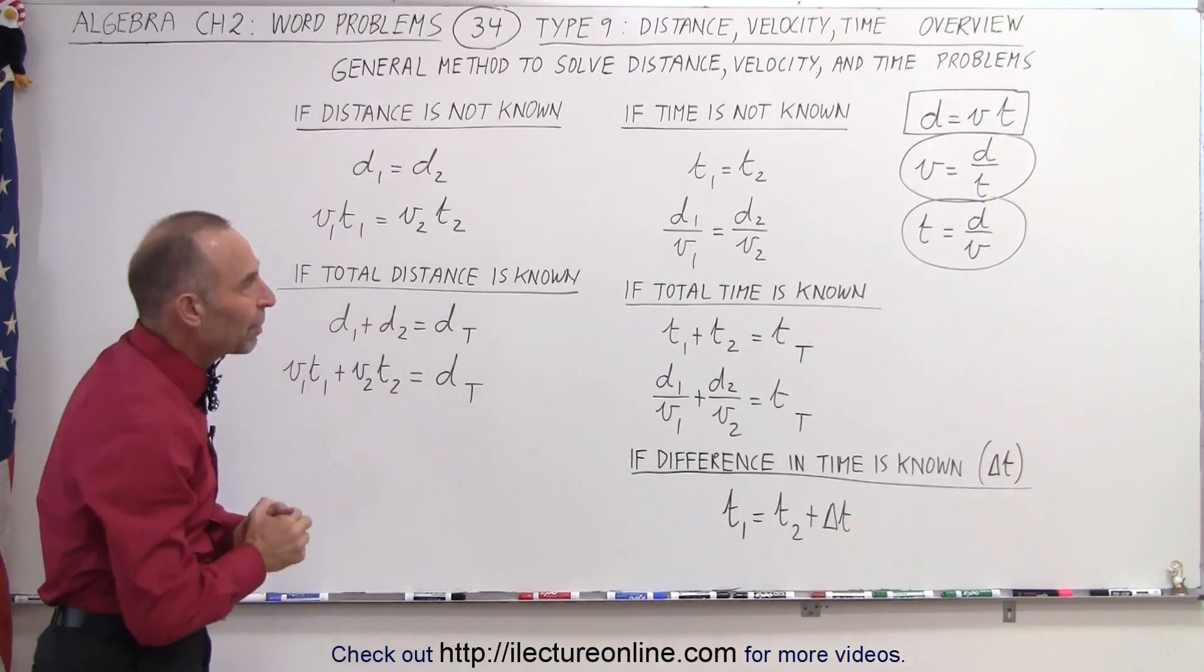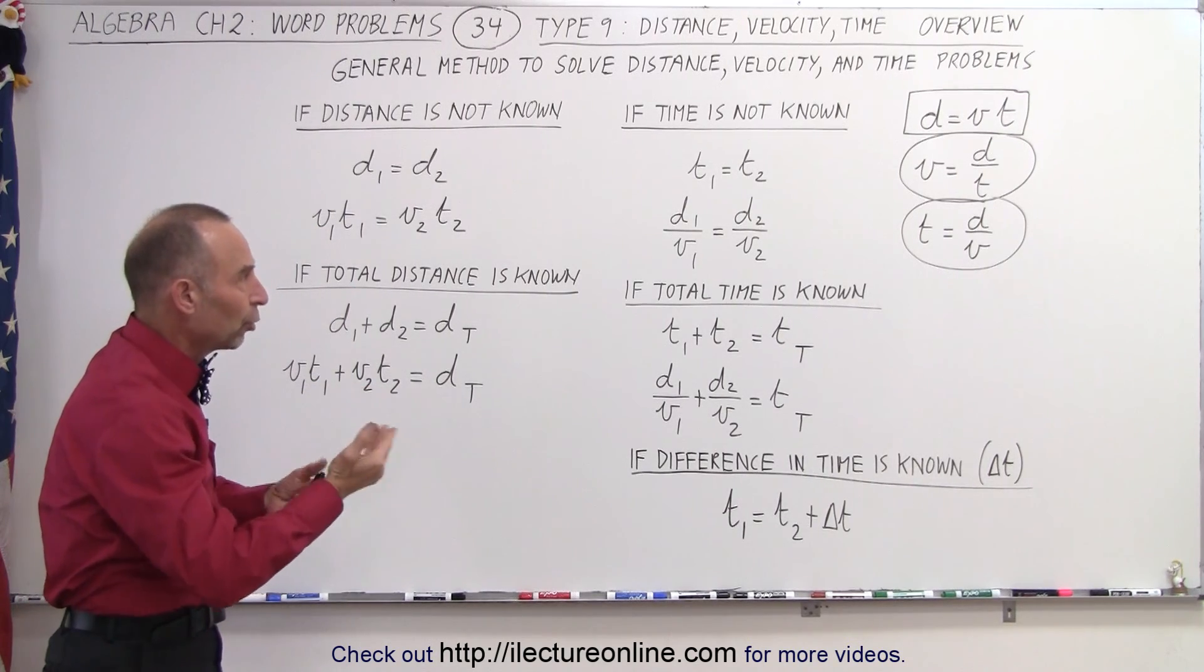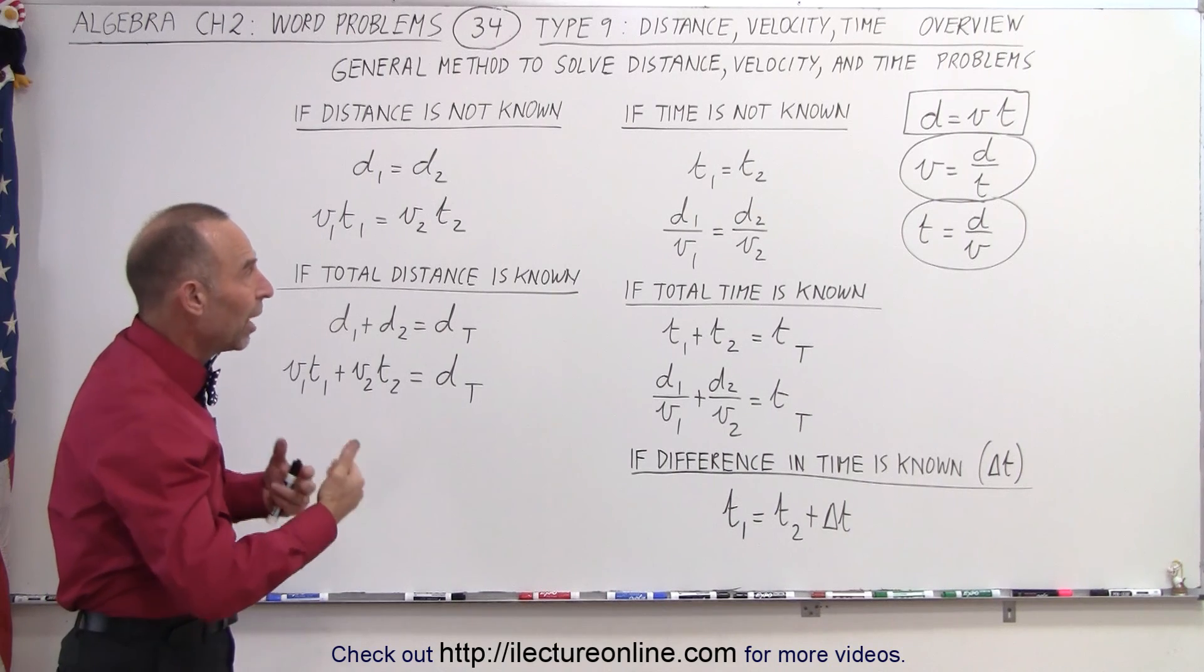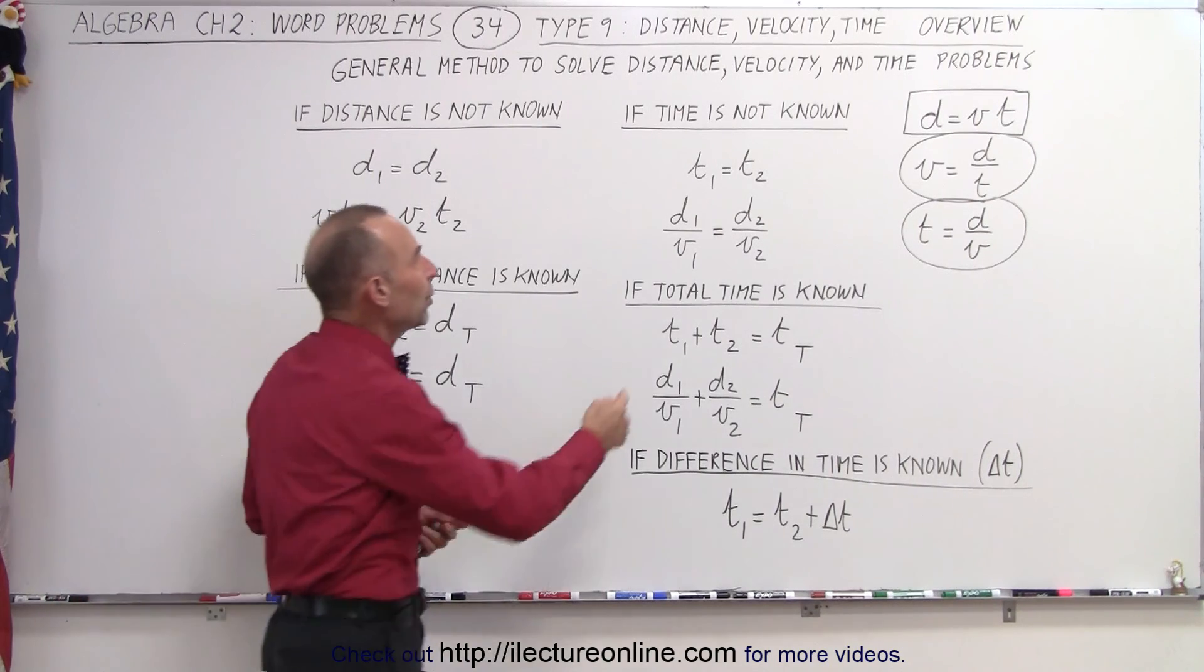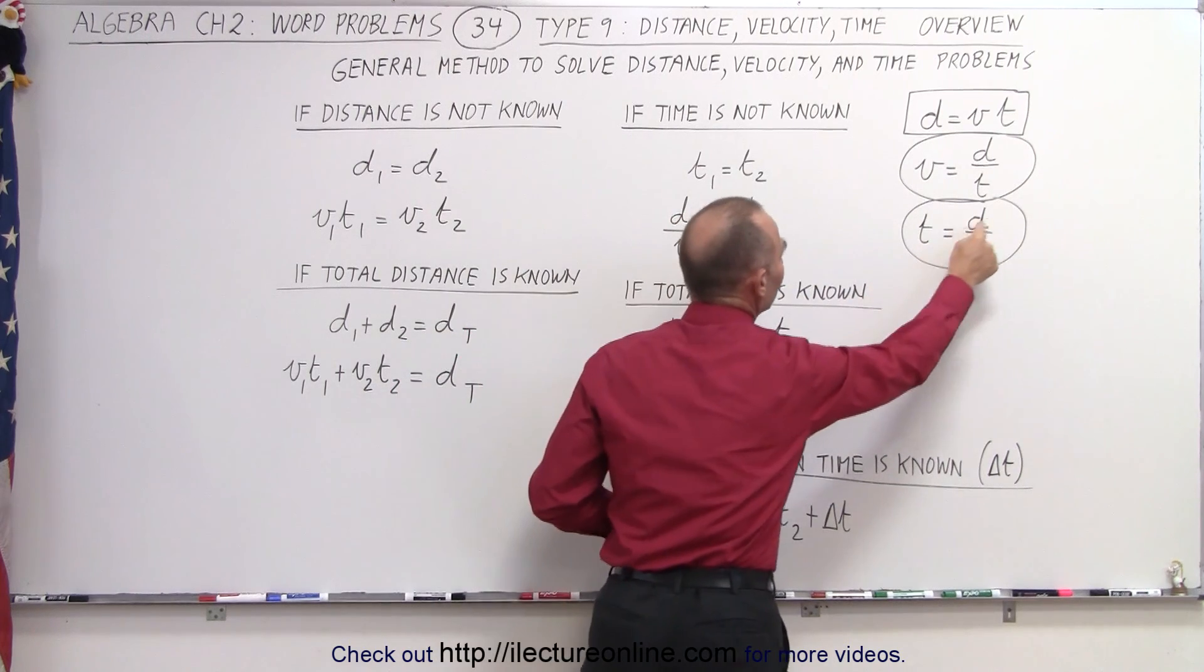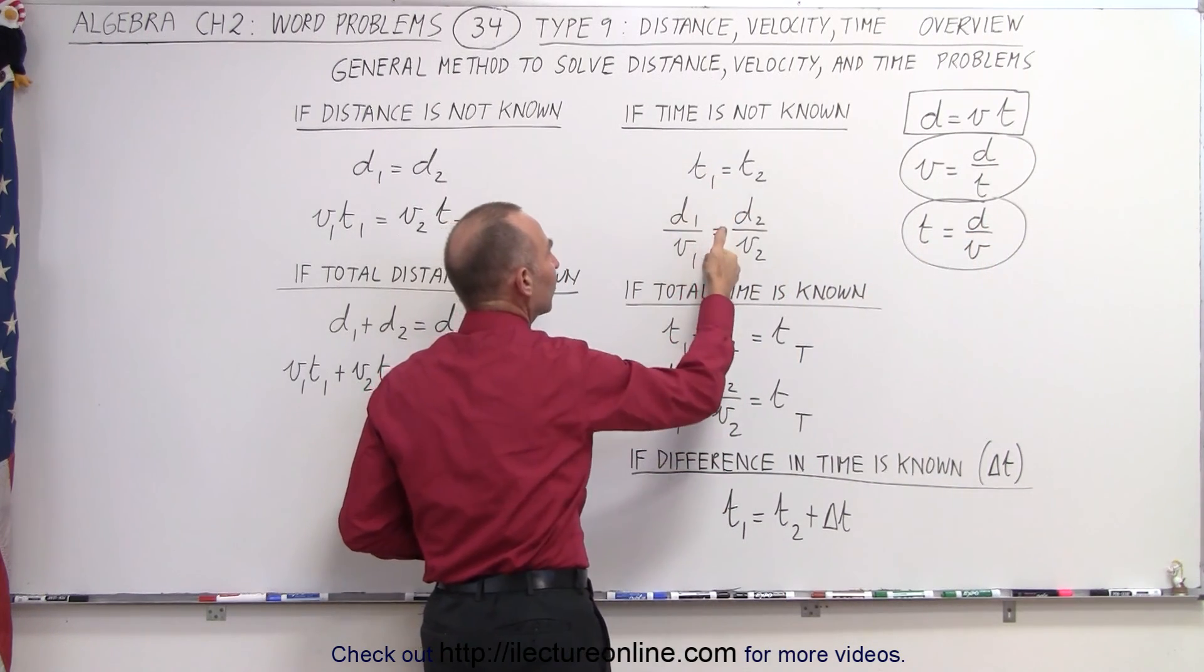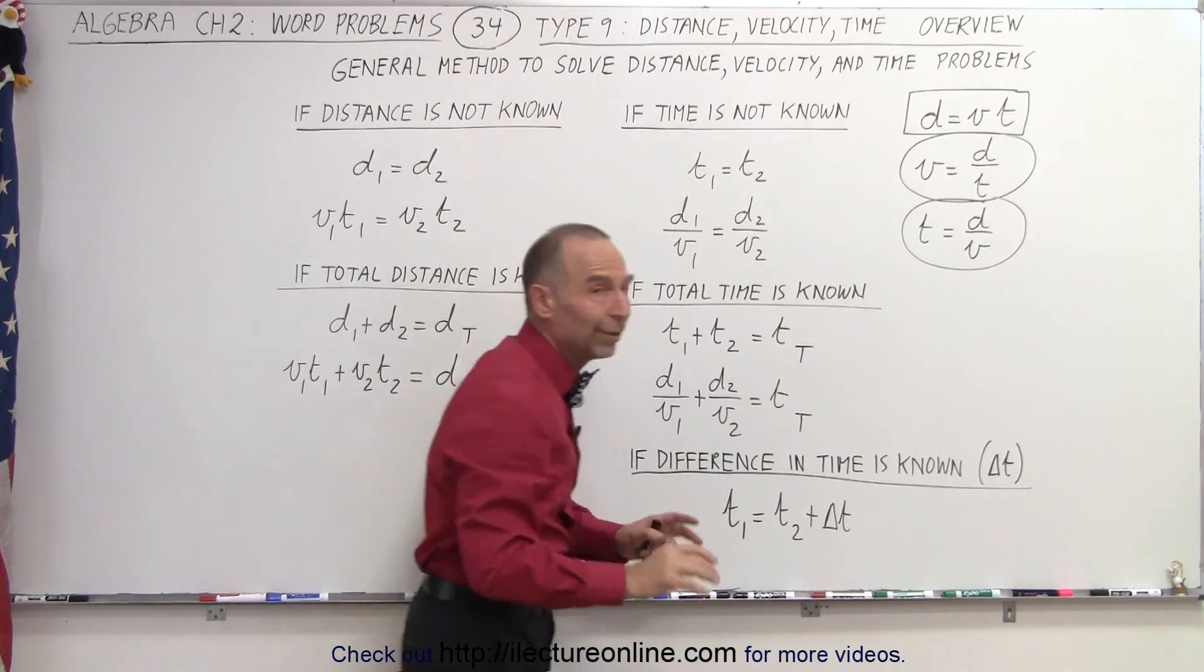There's also the possibility that we don't know what the time is. We don't know how much time each person or each mode of movement took. So again, we can write an equation where time one equals time two, and since time is distance divided by velocity, we can write that it's distance one over velocity one equals distance two over velocity two. That again eliminates the time.